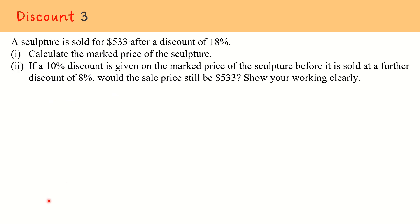In this third example, we are given that a sculpture is being sold for $533 after a discount of 18%. In the first part, we want to find the marked price of the sculpture. This $533 is the sale price which is after a discount, so upon taking 100% minus 18%, we get 82%, and 82% represents $533.